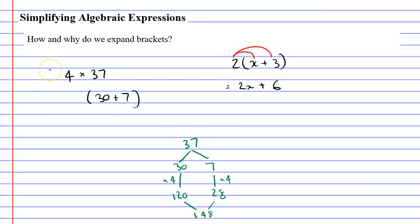And this time, I'm going to multiply that by 4, which means I'm going to multiply the 4 by the 30 and by the 7. 4 times 30 is 120, and 4 times 7 is 28. Then we add them together to get 148.